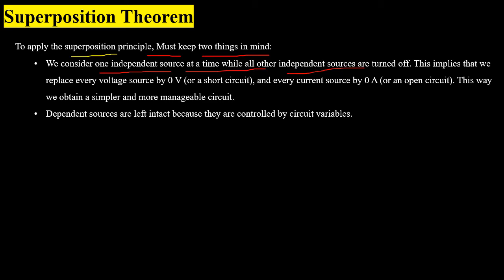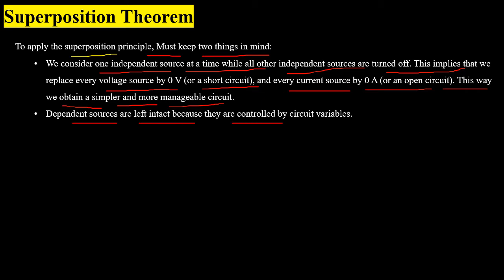Turning off sources implies we replace a voltage source with zero volts, or a short circuit, and every current source with zero amperes, or an open circuit, because no current flows through an open circuit. By doing this, the circuit is reduced to a more simplified form through which we can easily find the required values. The second point is that dependent sources are left intact because they are controlled by circuit variables, so we do not turn off dependent current or voltage sources when applying superposition.